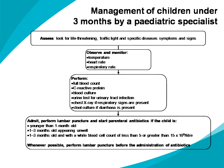What's the advice about management of babies under three months by a paediatric specialist? The specialist should look for life-threatening, traffic light and particular disease symptoms and signs. They should observe and monitor temperature, heart rate and respiratory rate. They should perform full blood count, C-reactive protein, blood culture, urine test for urinary tract infection, chest x-ray if respiratory signs are present, and stool culture if diarrhoea is present. They should admit, perform lumbar puncture and start parenteral antibiotics if the child is younger than one month old, one to three months old and appearing unwell, or one to three months old with a white blood cell count of less than 5 or greater than 15 × 10⁹/L. Whenever possible, perform lumbar puncture before administration of antibiotics.